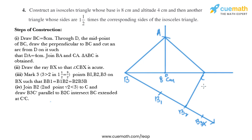Now we'll extend BC and draw a line parallel to B2C. We'll mark the point of intersection as C'.